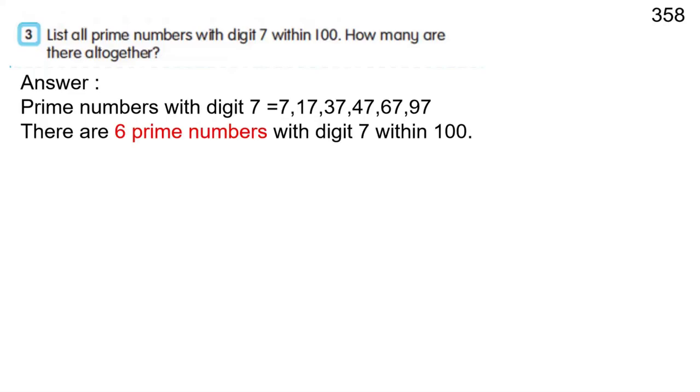Question 3: List all prime numbers with digit 7 within 100. How many are there altogether? Answer: Prime numbers with digit 7 equals 7, 17, 37, 47, 67, 97. There are 6 prime numbers with digit 7 within 100.